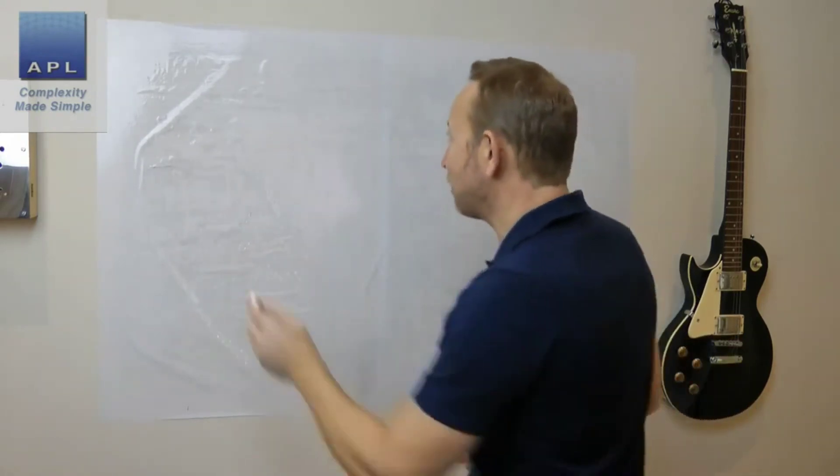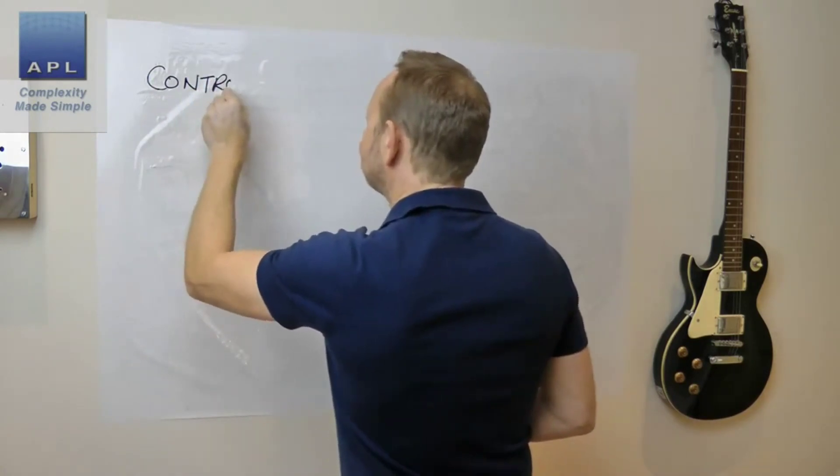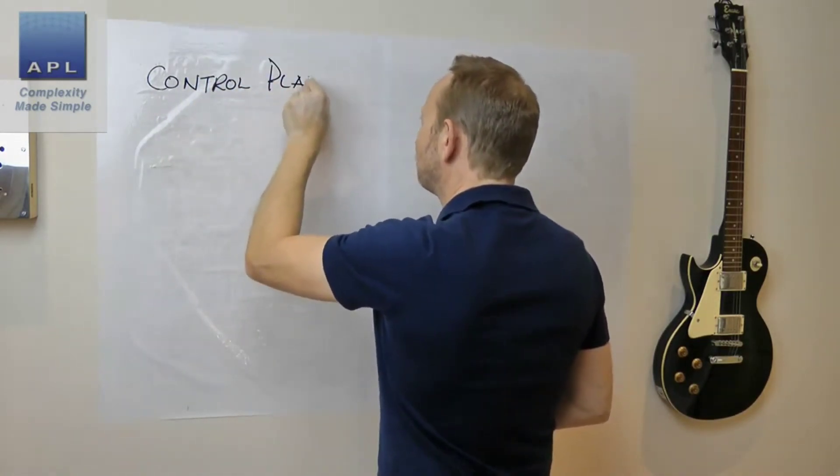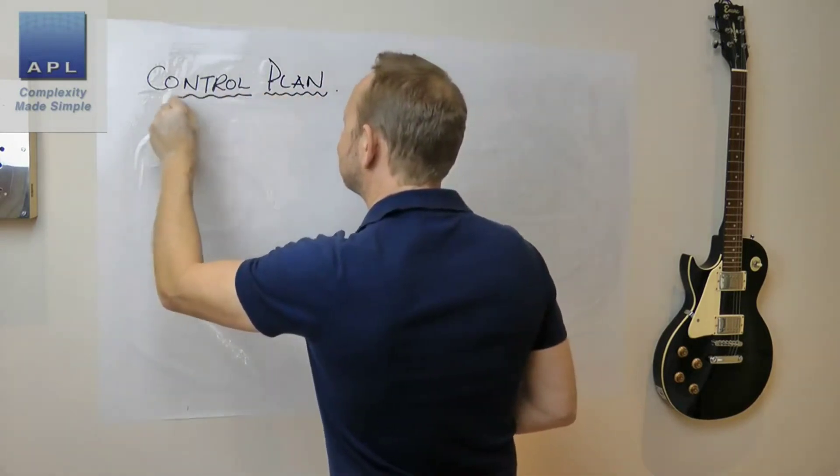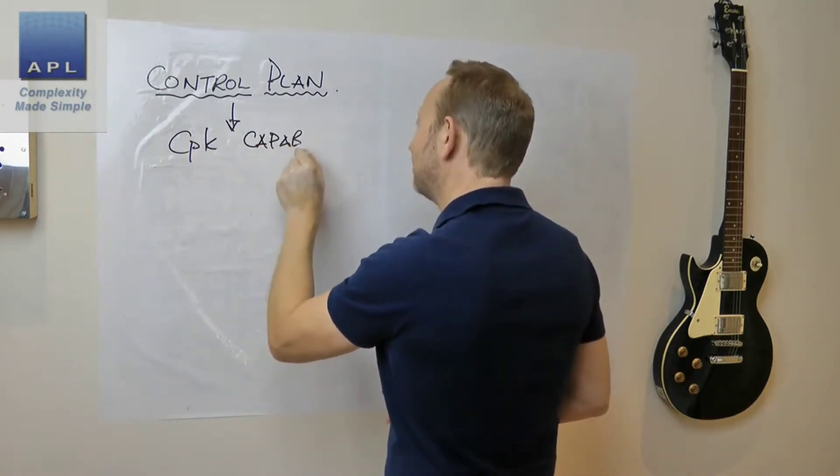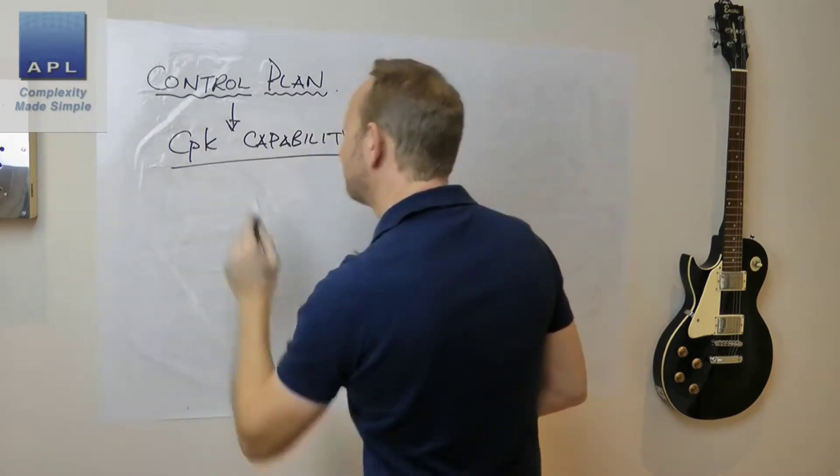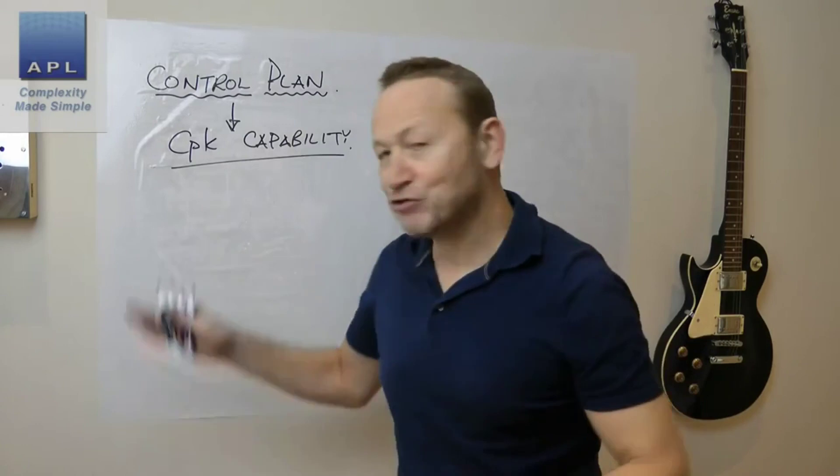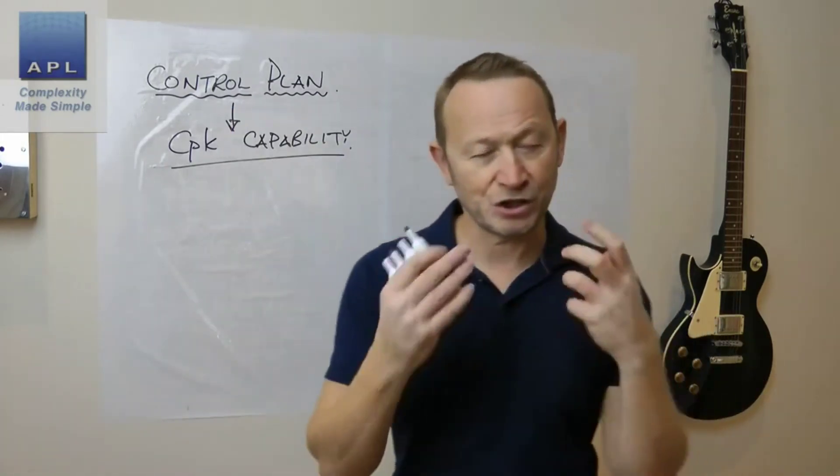Welcome to Complexity Made Simple, my name is Paul Allen. The subject of today's video newsletter: we're going to talk about control plans, proper control plans. What is your control plan trying to do? Basically, you're trying to get your CPK, your process capability, to be under control, to be in a good place. We want to get your process capability right. So we're going to take a look at a proper control plan, not an inspection plan.